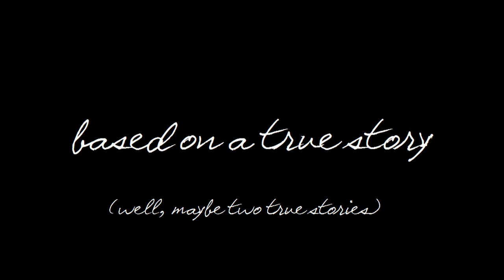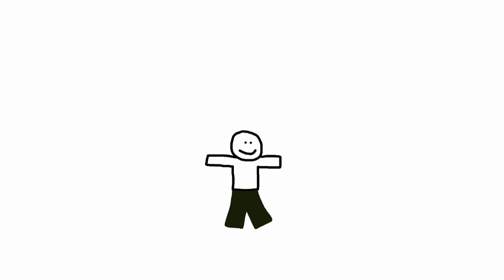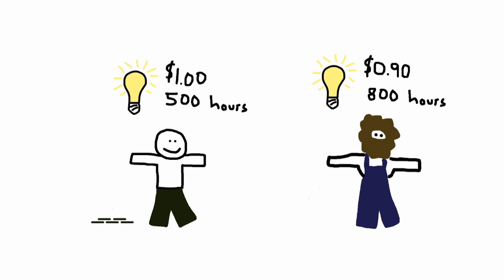Once upon a time there was a guy named Mr. Stinky Pants. He sold light bulbs. He sold a million light bulbs per year where he made five cents per light bulb. He earned fifty thousand dollars per year. Sometimes a competitor would sell a better light bulb for less.